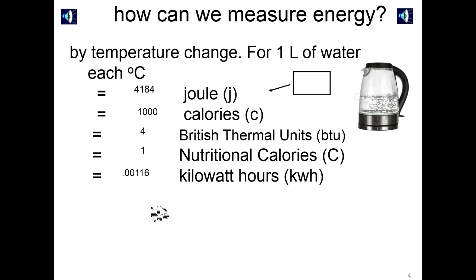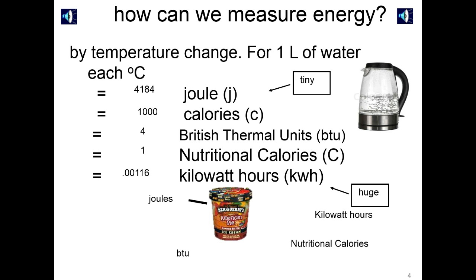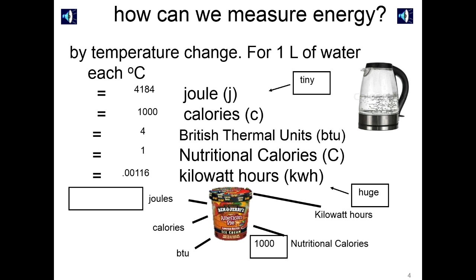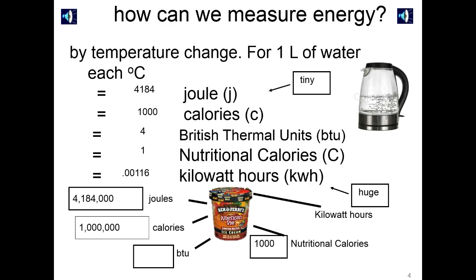Let us relate this to various things — tiny units on one end, huge units on the other. While this populates, let's consider a pint of Ben and Jerry's ice cream. How many nutritional calories does it have? A lot — like a thousand. So that must be way more in terms of joules. One nutritional calorie equals 4,184 joules, so that's about 4,184,000 joules in that pint of ice cream. In terms of scientific calories, only a million — 4.184 times lower. That's 3,960 BTUs, and the number of kilowatt hours in a pint of Ben and Jerry's ice cream is simply 1.16.